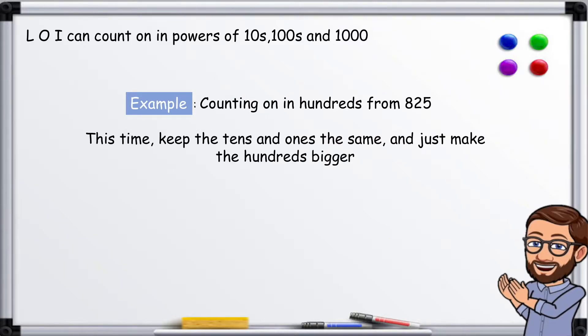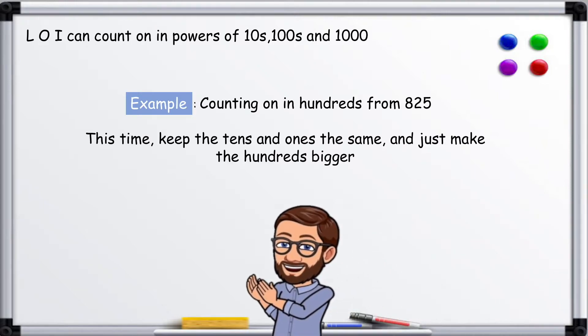Example: counting on in hundreds from 825. This time, keep the tens and ones the same and just make the hundreds bigger.